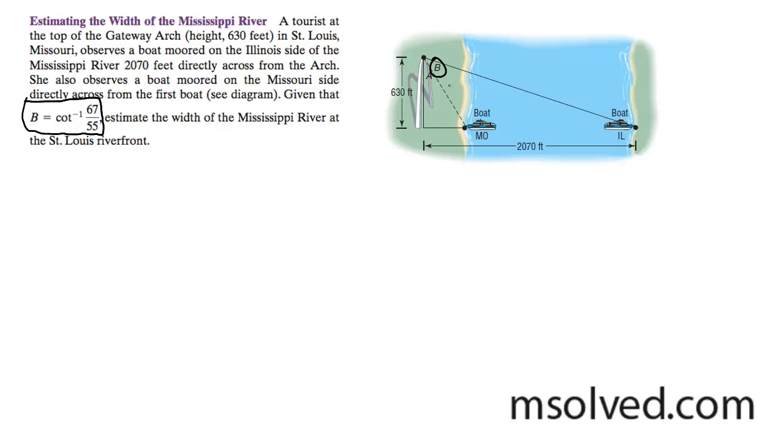What we start off by doing here is finding this angle. What I did is tangent of theta - I'll just call it theta - in this case it's equal to 630 over 2070.